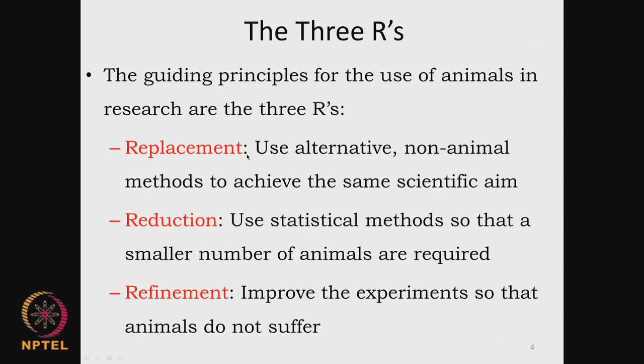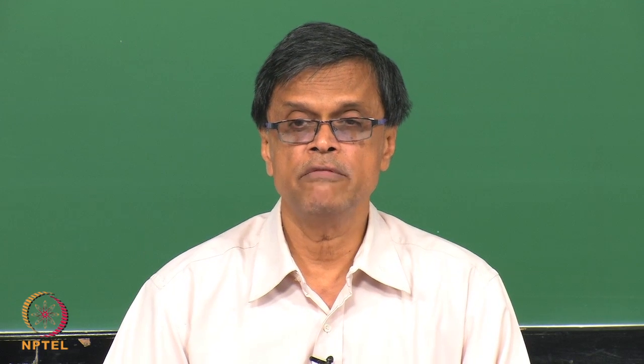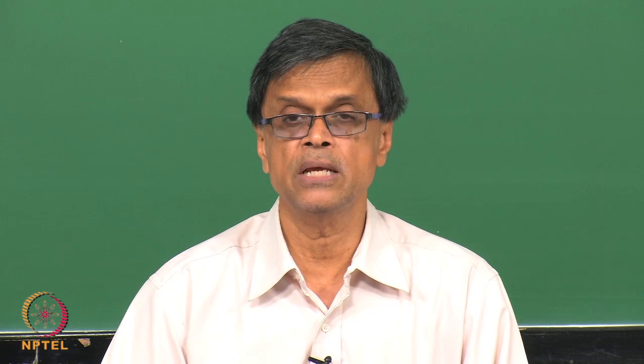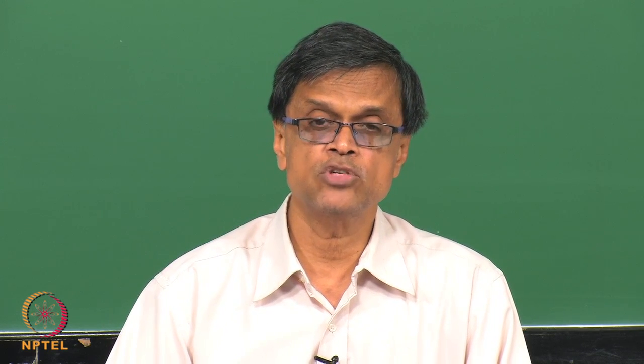The main guiding principle in animal testing is replacement, reduction and refinement. Any ethical committee will ask these questions: can you reduce the number of animals, can you have experiments which do not use animals, or are you refining your experimental strategy so that the animals do not face too much pain or the experimental duration is much smaller?